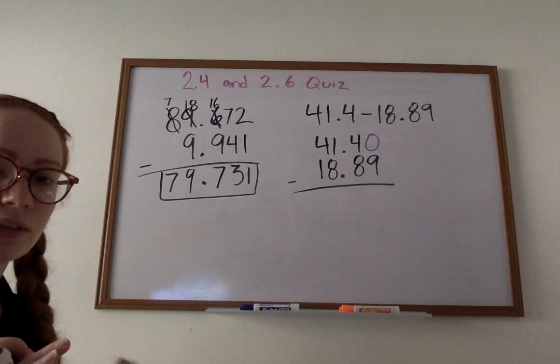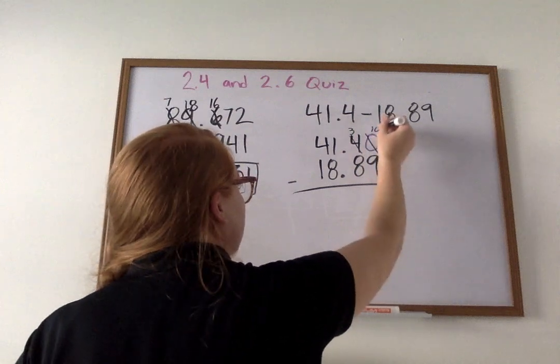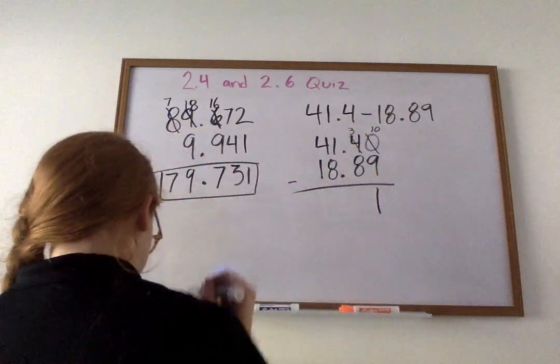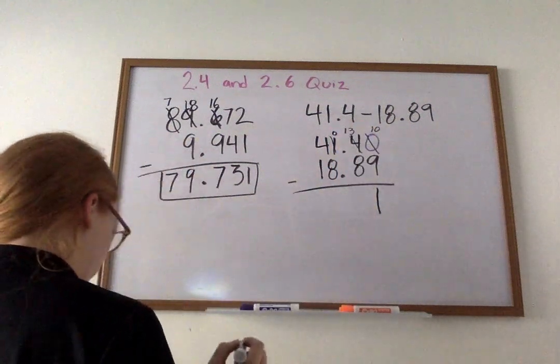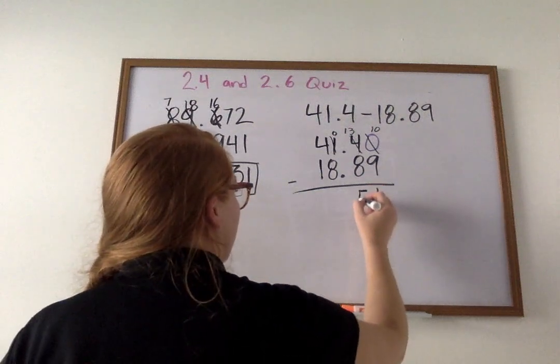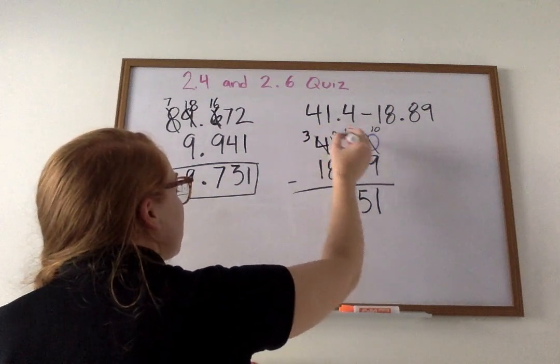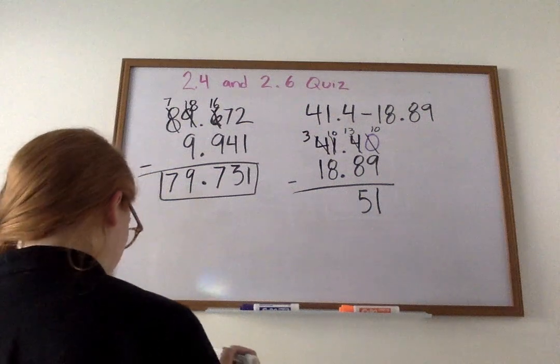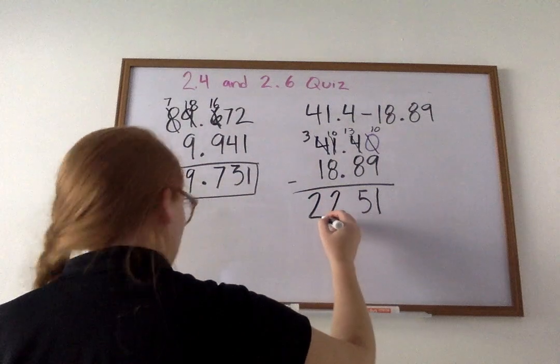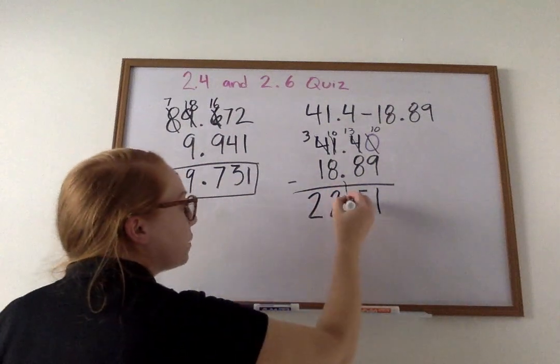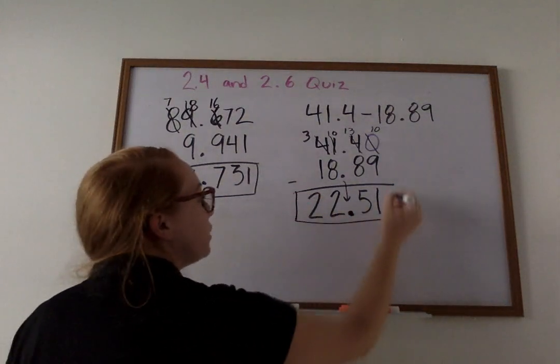0 minus 9. Can I do that? Nope. We can't do 0 minus 9. My 4 becomes a 3. My 0 becomes a 10. 10 minus 9 is 1. 3 minus 8. Can I do that? Nope. My 1 becomes a 0. My 3 becomes a 13. 13 minus 8 is then going to be 5. Then 0 minus 8. Again, I'm stuck. I'm going to borrow from my 4. My 4 is a 3. My 0 becomes a 10. 10 minus 8 is 2. 3 minus 1 is 2. I have to remember that my decimal comes straight on down. It stays in the same spot. So 22 and 51 hundredths is my answer.